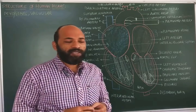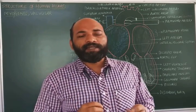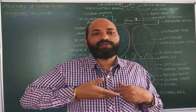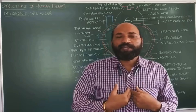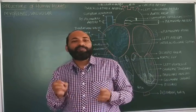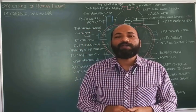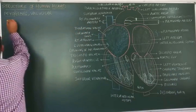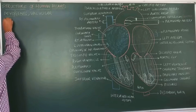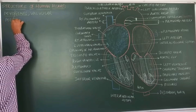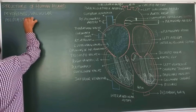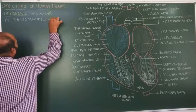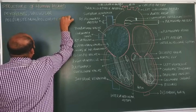The human heart is located in the space between the two lungs, just above the diaphragm. That space is called the mediastinum or mediastinal cavity. That is the location where the human heart is present.